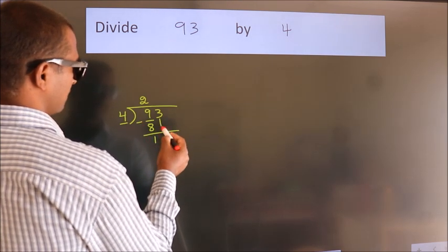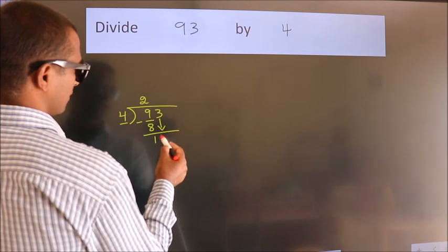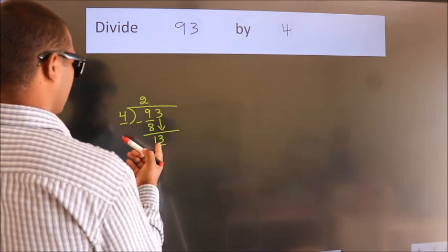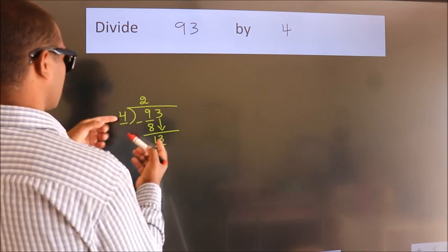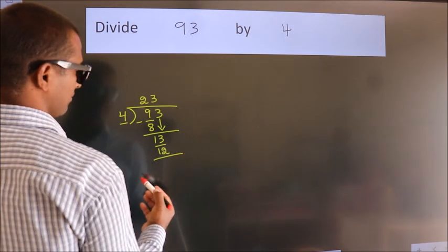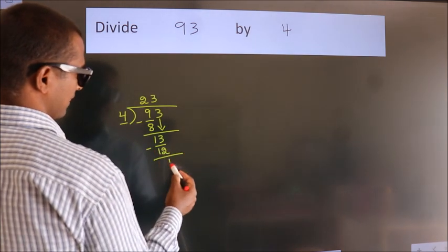After this, bring down the next number. So 3 down. So 13. A number close to 13 in the 4 table is 4 threes, 12. Now we subtract. We get 1.